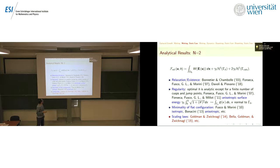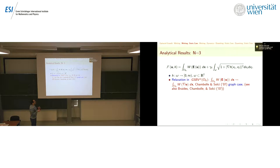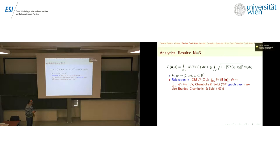Now let me go to dimension three. In the isotropic case, omega is a subset of R^2, and the surface energy now measures the two-dimensional surface — the graph is now a surface. The same program applies: the energy is generally not lower-semicontinuous in 3D either, so you need to study the relaxed energy. The first paper on relaxation in three dimensions was by Chambol and Margarita Solzzi in 2007 in the graph case, and then Chambol and Solzzi in the non-graph case. In those two papers the symmetrized gradient was replaced by the full gradient.